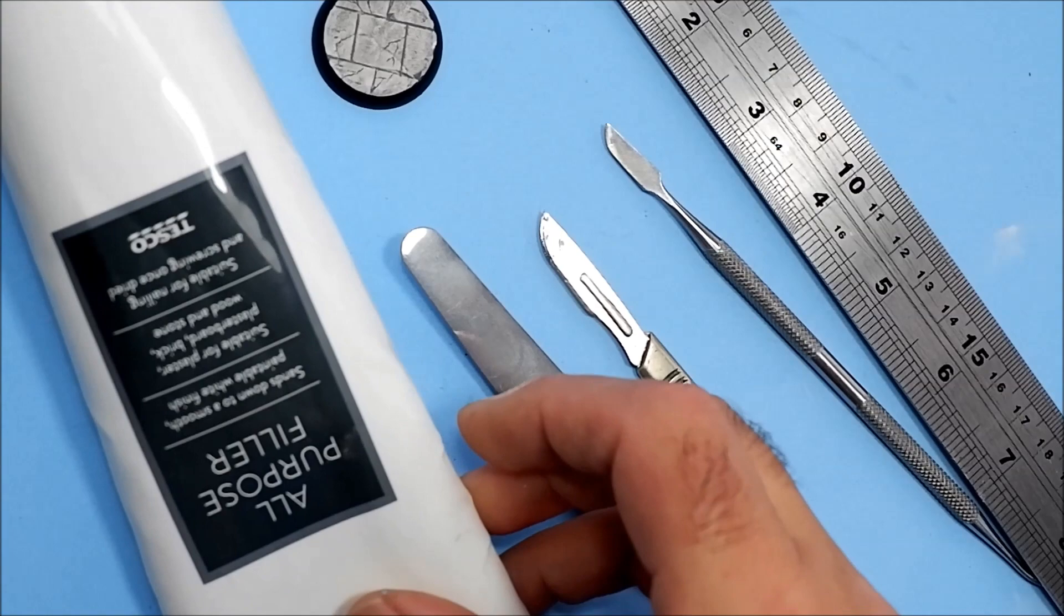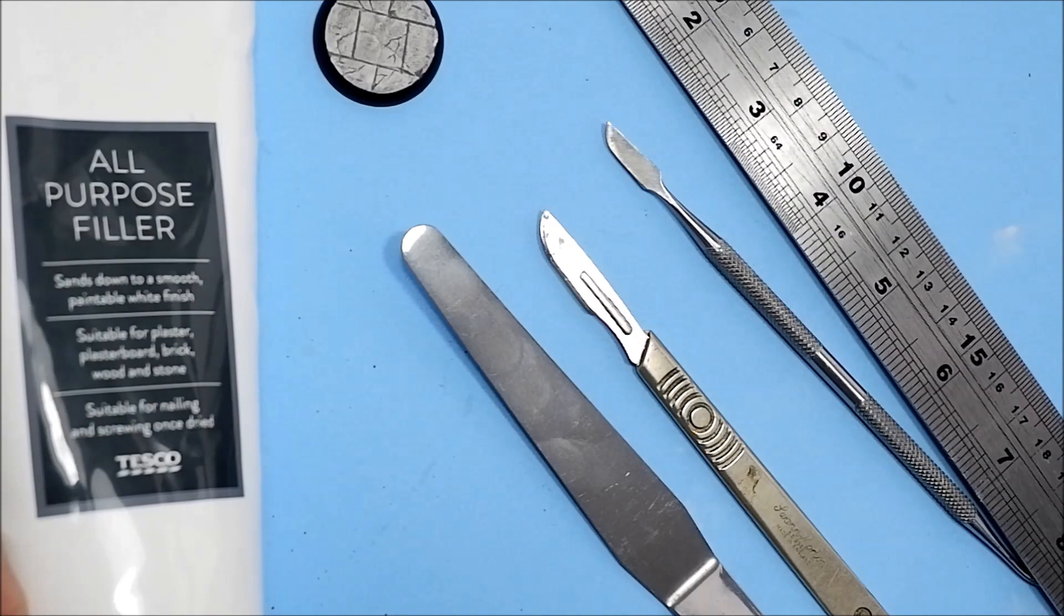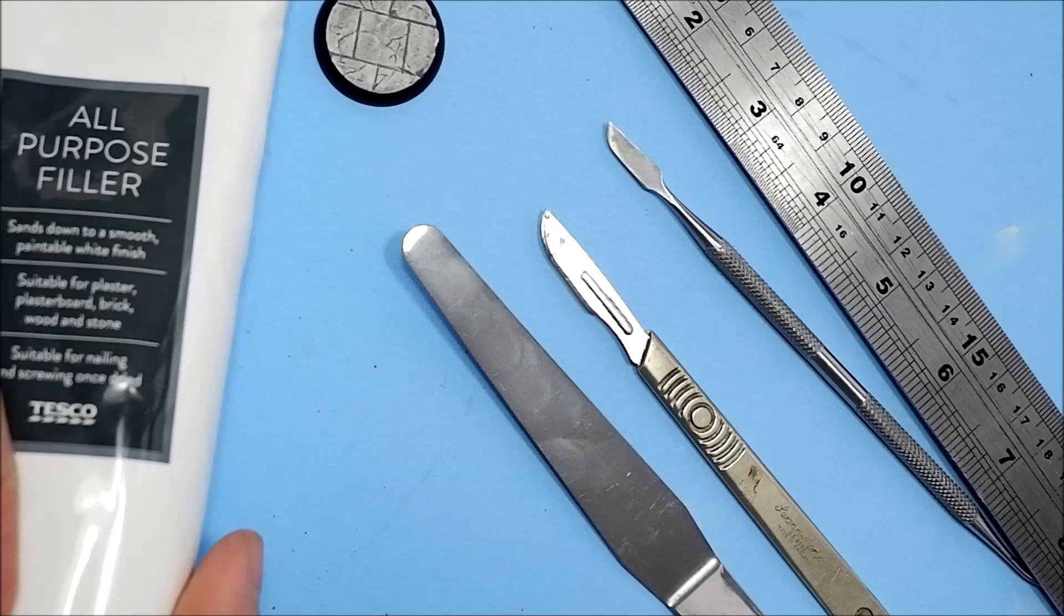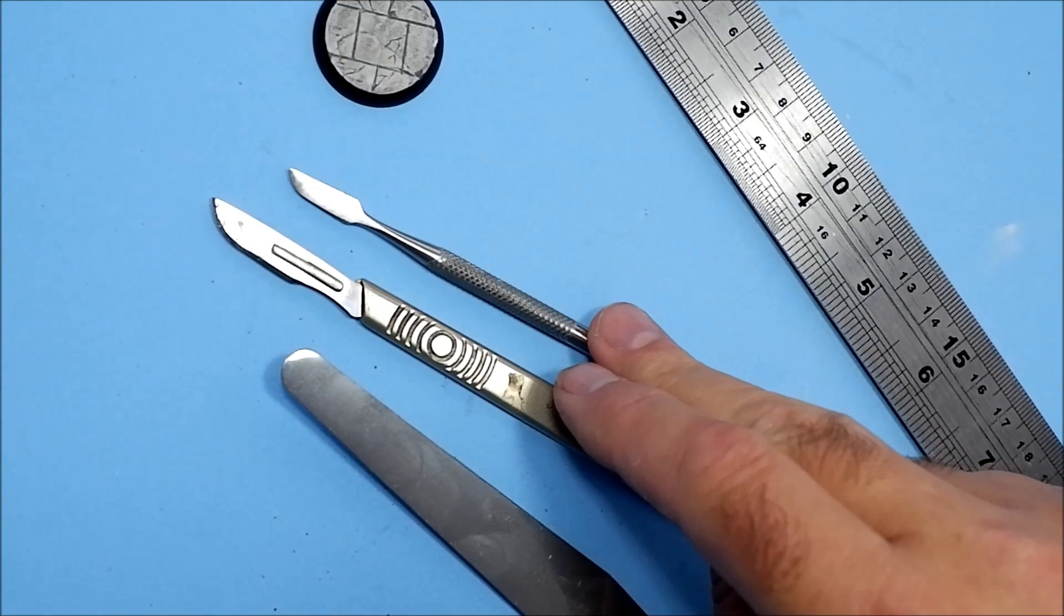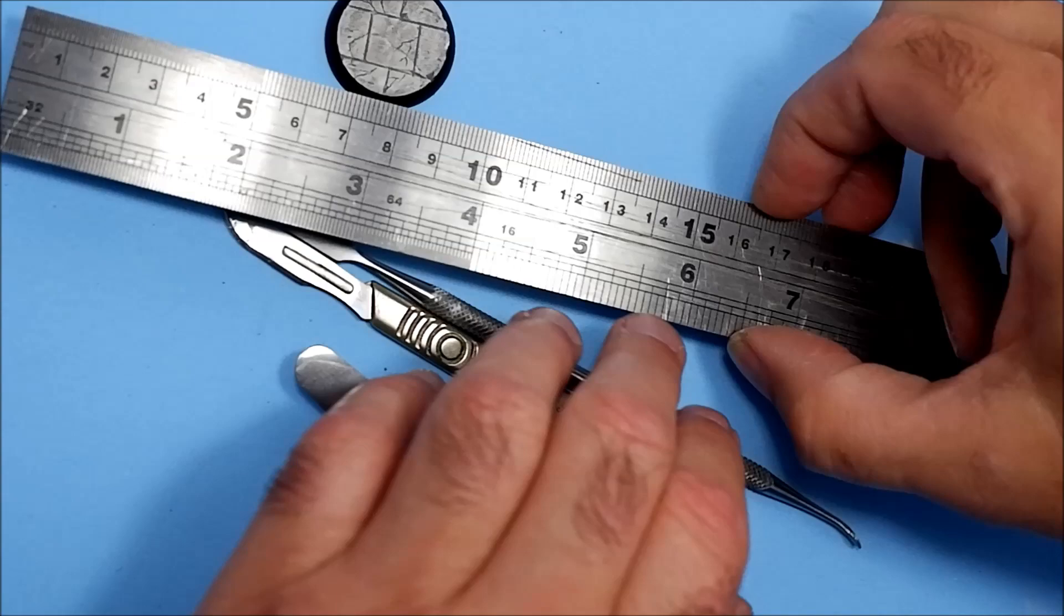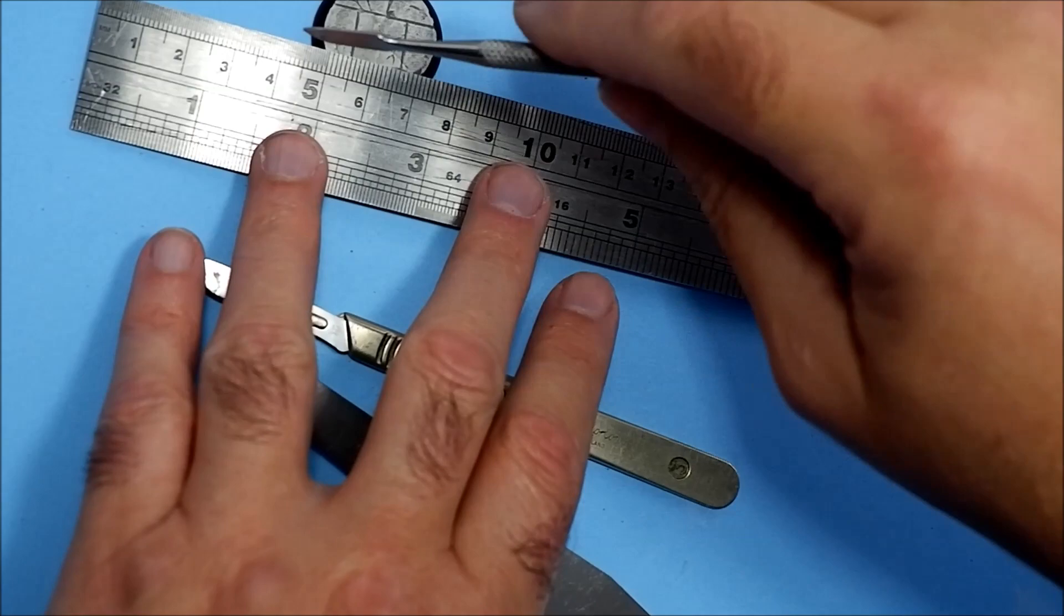First of all, filler, all-purpose filler. You can use polyfiller, anything really. This one's from a local supermarket, dead cheap to get hold of and it'll last ages. I'm going to use a sharp knife and use this tool or any kind of blunt-edged object to score in the lines. That's what the ruler is for. You go across and you score in the lines.